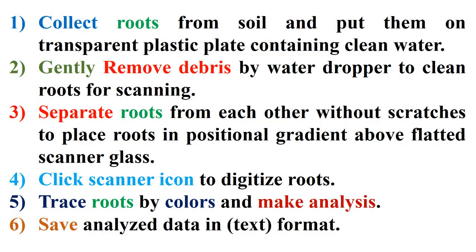The steps of WinRizzo analysis begin by collecting roots from soil and placing them on a transparent plastic plate containing clean water. After that, gently remove debris by water dropper to clean roots for scanning. Then separate roots from each other without scratches, to place roots in positional gradient above the flatted scanner glass, and click the scanner icon to digitize roots.